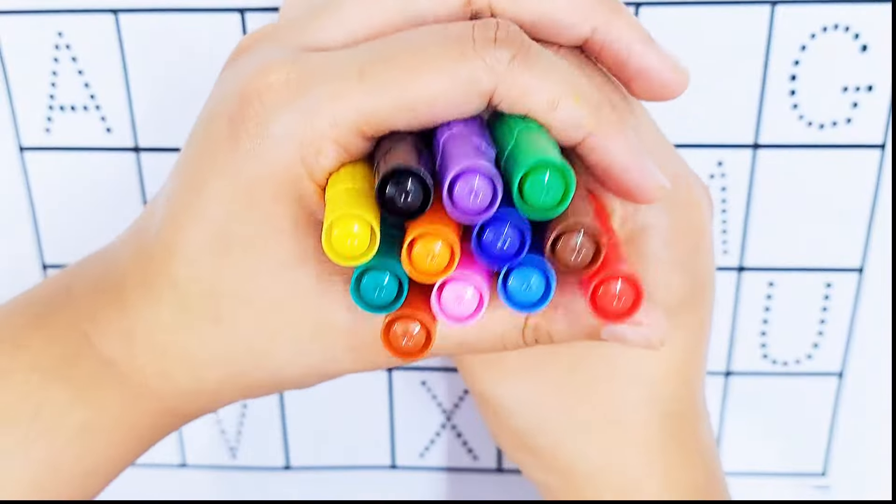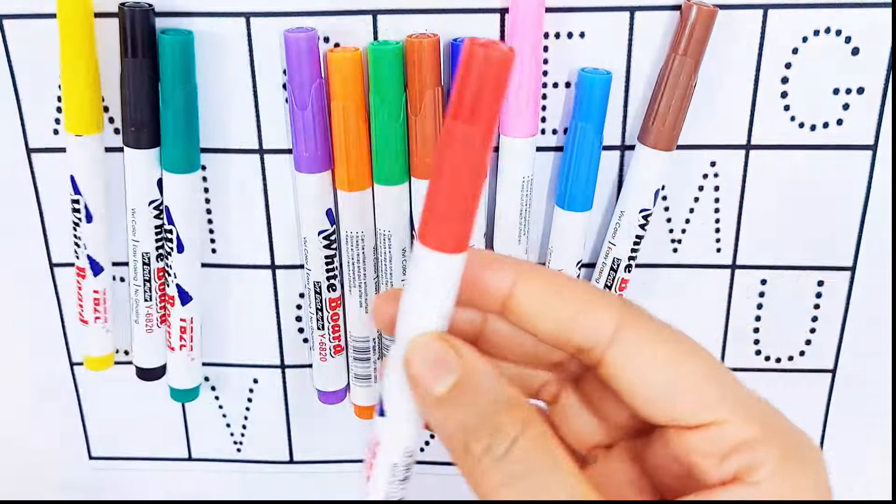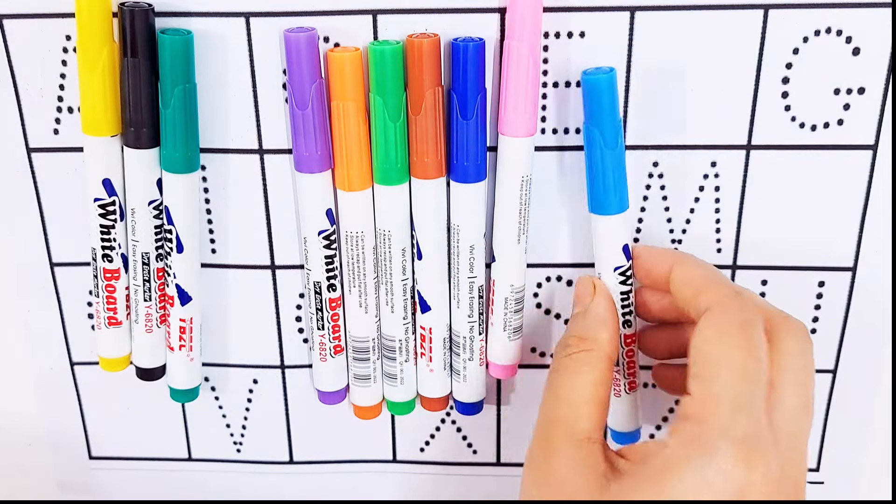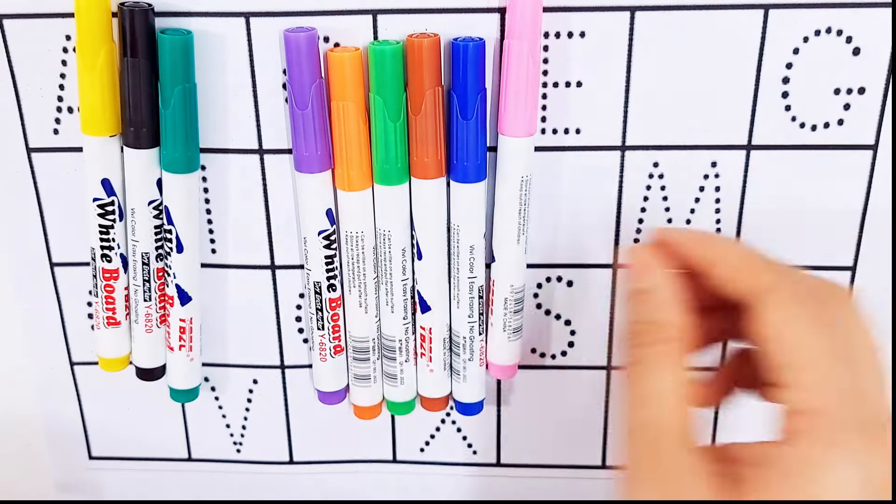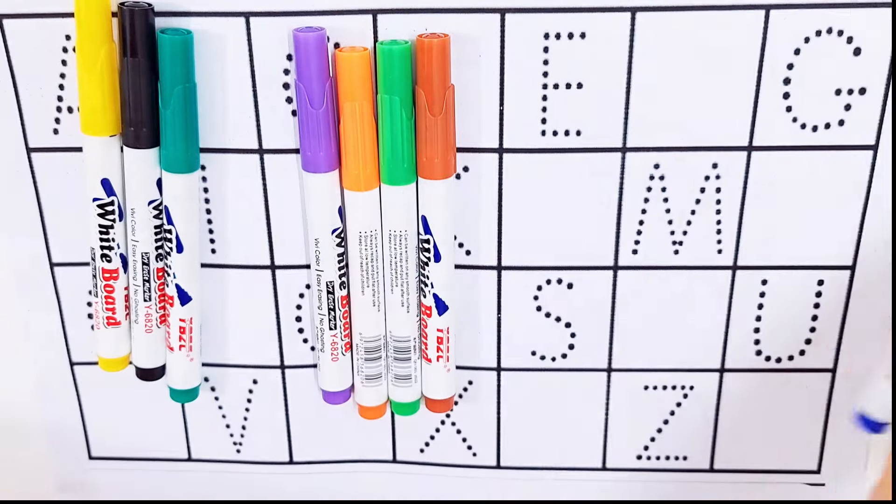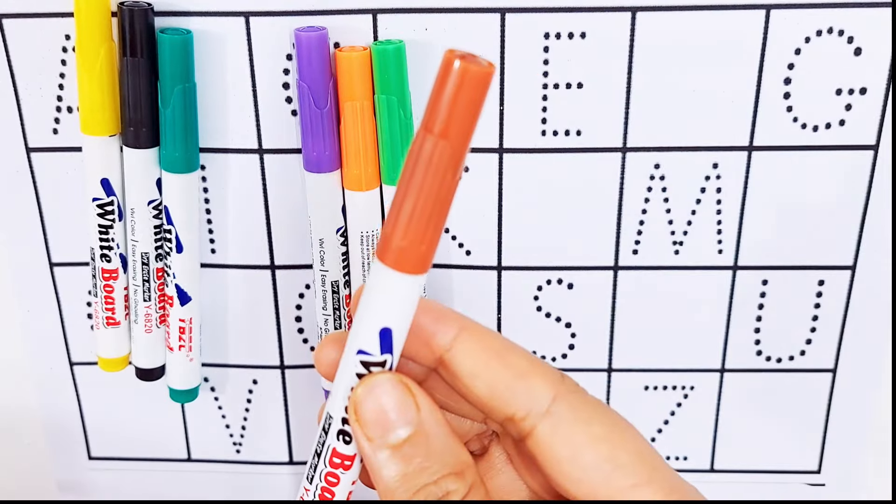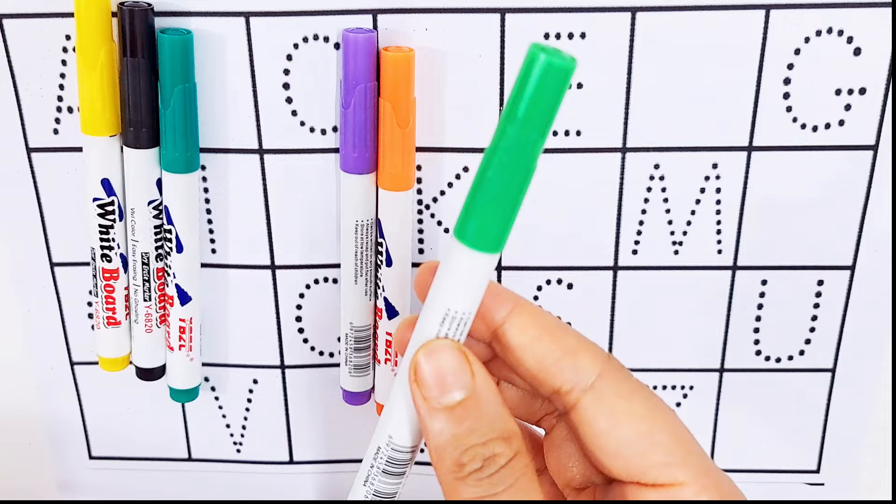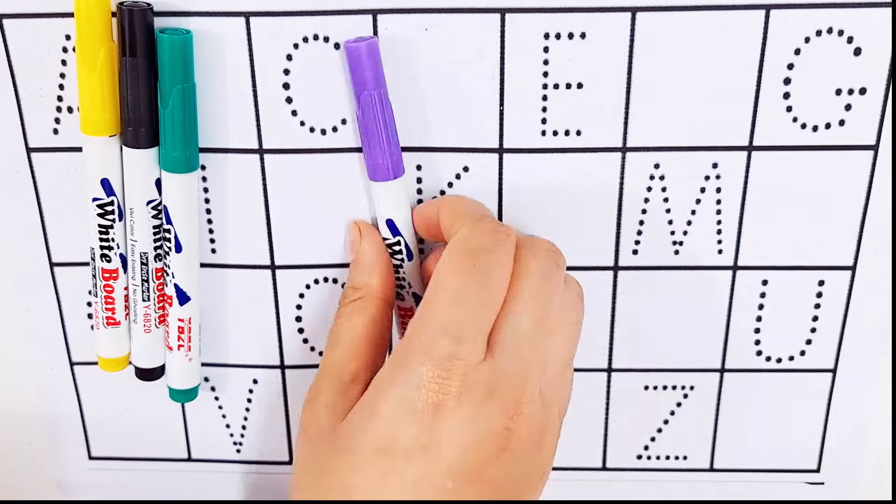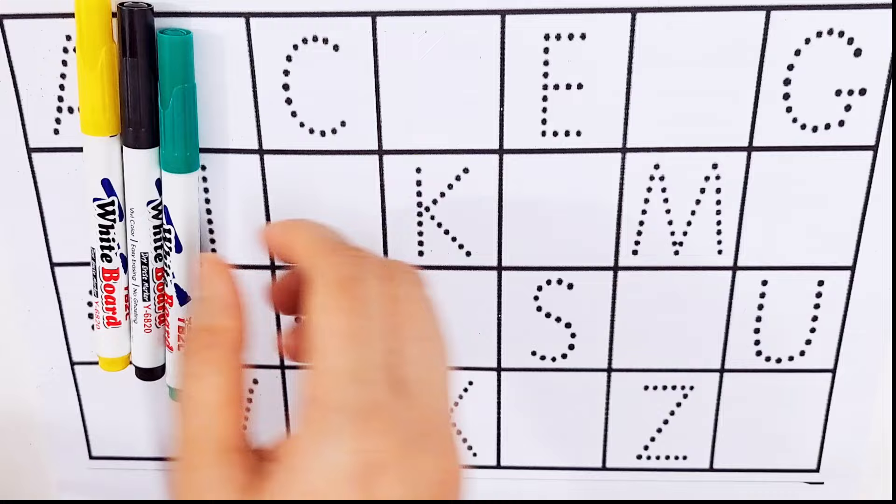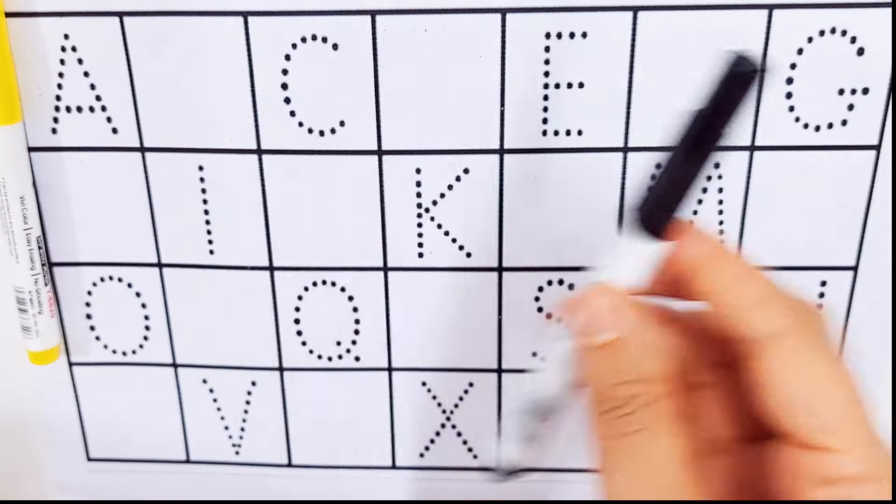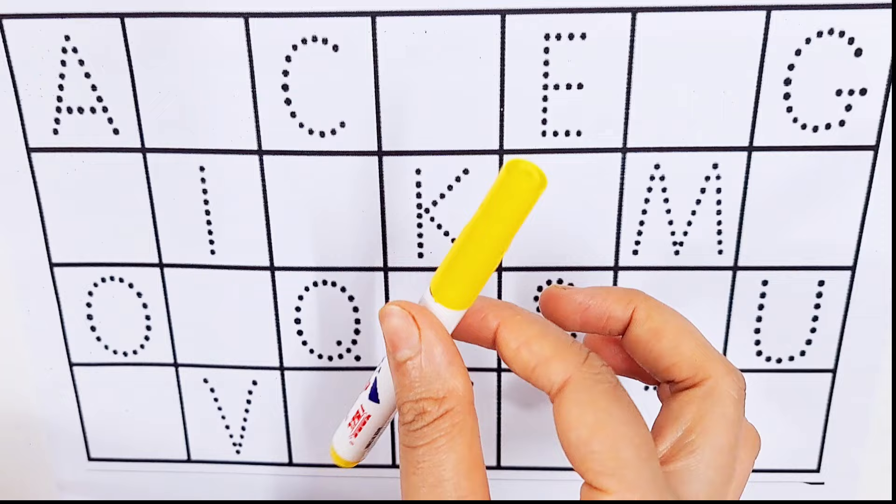Hello kids, let's learn some colors name. Red color, maroon color, sky blue color, pink color, dark blue color, brown color, green color, orange color, violet color, teal color, black color, yellow color.